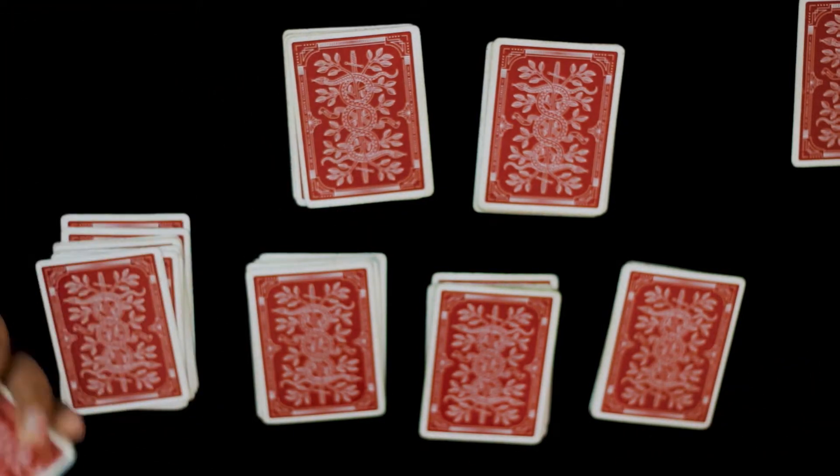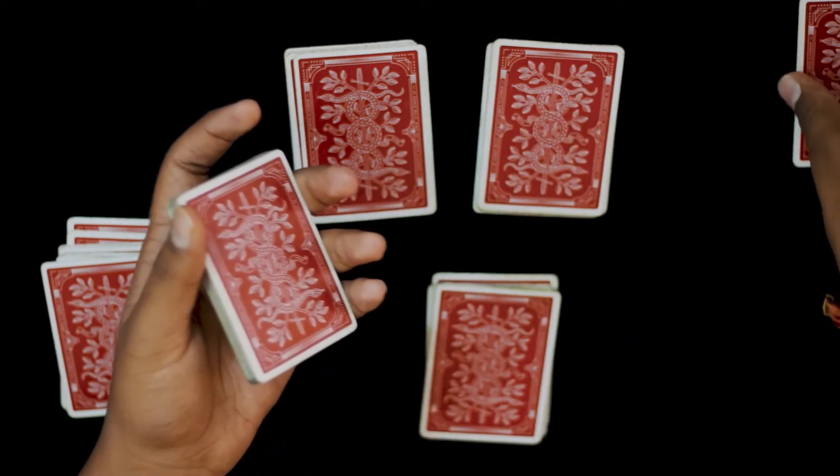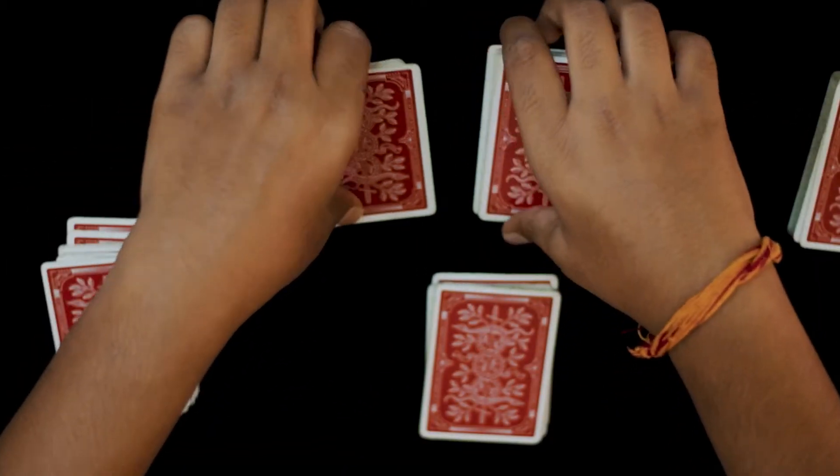So let's say your spectator eliminates any 3 piles, this one, this one, and maybe this one. And you're gonna keep them with these remainder cards right over here and just keep them off to the side.